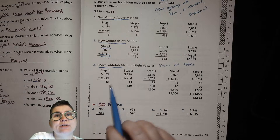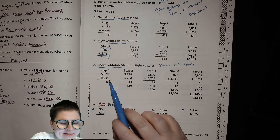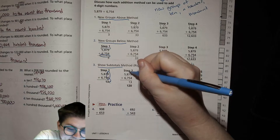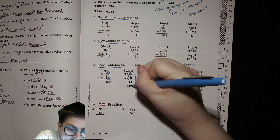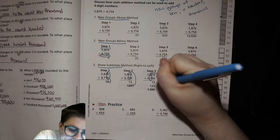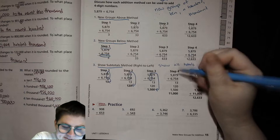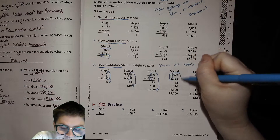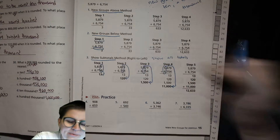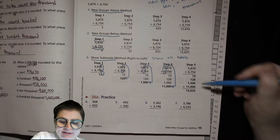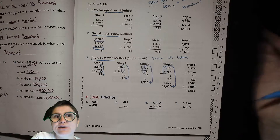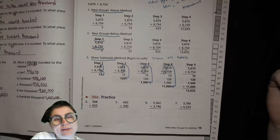Finally, the show subtotals method — similar to the show all totals method. This one goes from right to left. Nine plus four is thirteen; you put that there. Seven tens plus five tens is 120. Eight hundred plus seven hundred is fifteen hundred. Five thousand plus six thousand is eleven thousand. Then you add all those up. If you hate messing around with carrying new tens to the next column, this might be a strategy for you, since the final addition involves less regrouping.